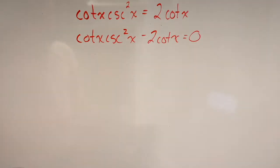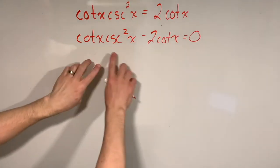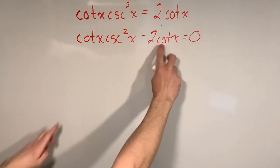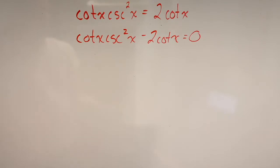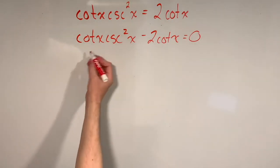Now if you put on your math hat and you take a look at this equation, you're going to notice that this term here and this term here both have a cotangent x in common. And when there's things common in math equations, we like to factor them out. So we're going to do that.